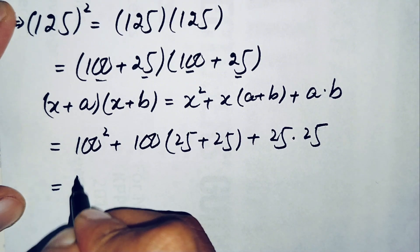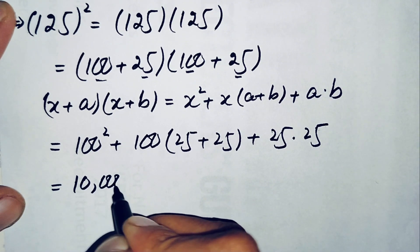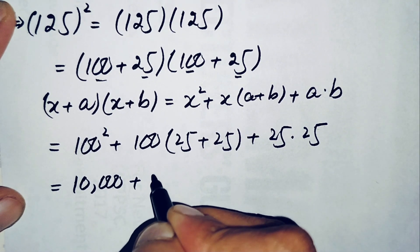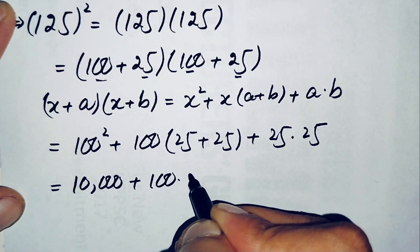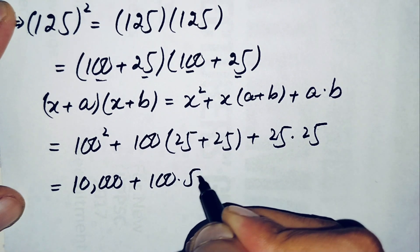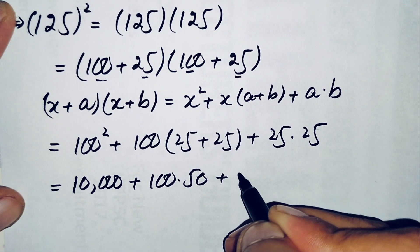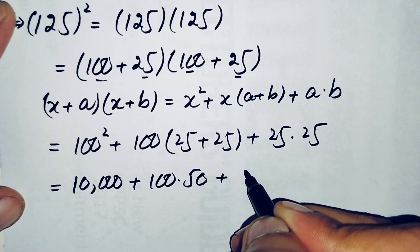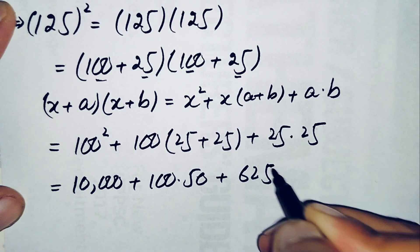Simplifying: 100 squared is 10,000; 100 times 50 is 5,000; and 25 squared is 625. So we have 10,000 plus 5,000 plus 625.